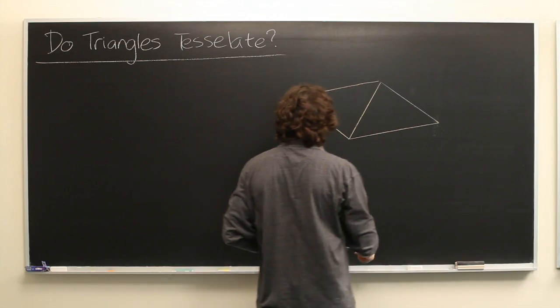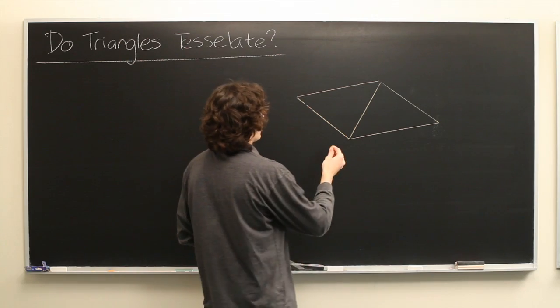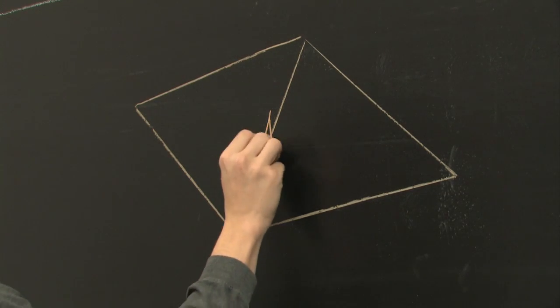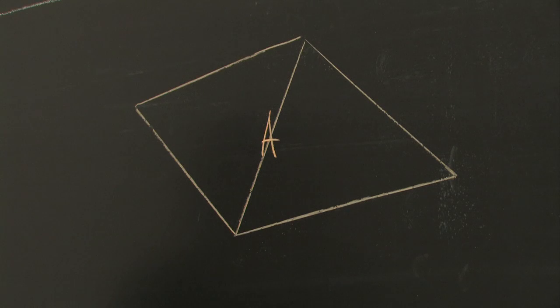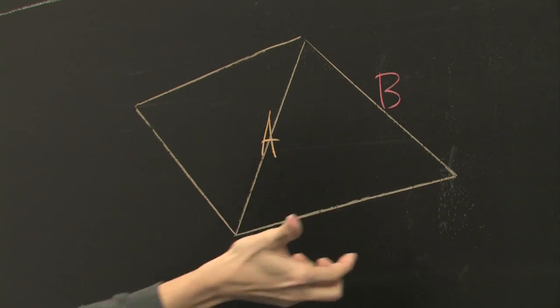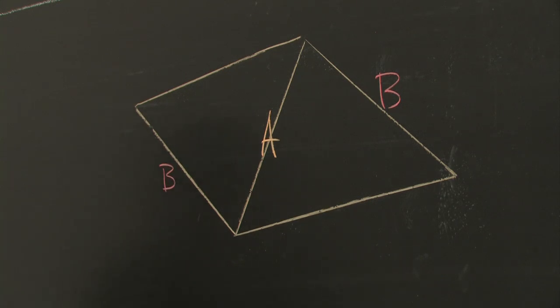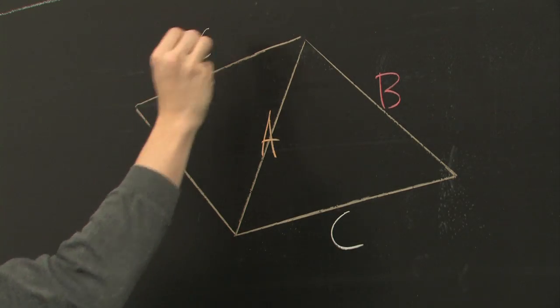Okay. So, we'll go ahead and label these sides so you can see how they all line up. We'll call this A for both triangles. This is B, and then after rotating, this is B as well. And then this long side here is C. And after rotating, this becomes C.